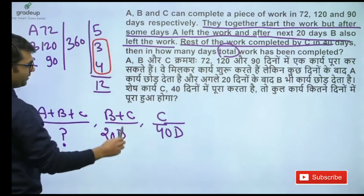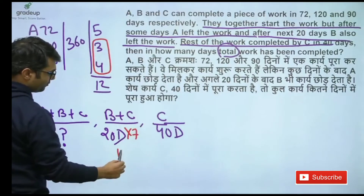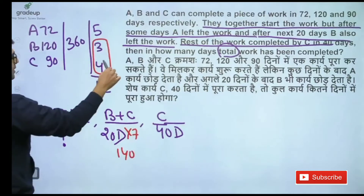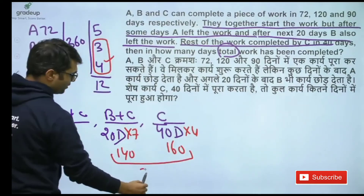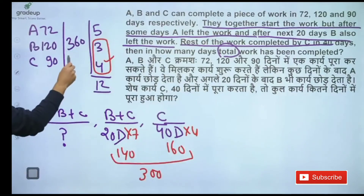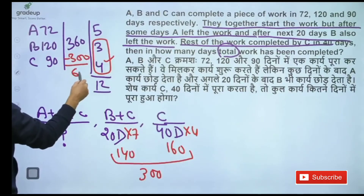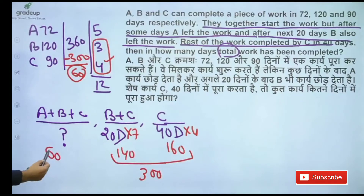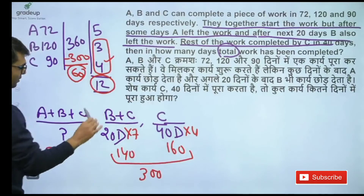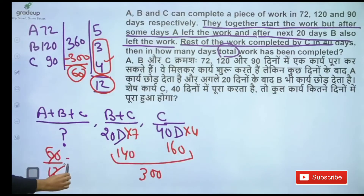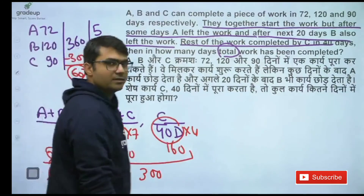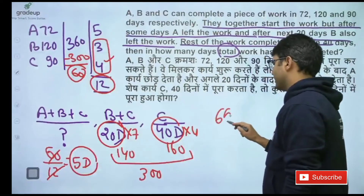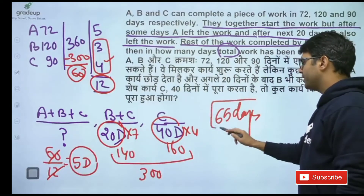B and C can do 7 units in a day, so in 20 days that's 140 done. C can do 4 units in a day, so in 40 days that's 160 done. Total work done = 300. Rest work is 60, and this is to be done by A, B, C together. ABC can do 12 unit work in a day, so 5 days. Answer: 5 + 20 + 40 = 65 days.